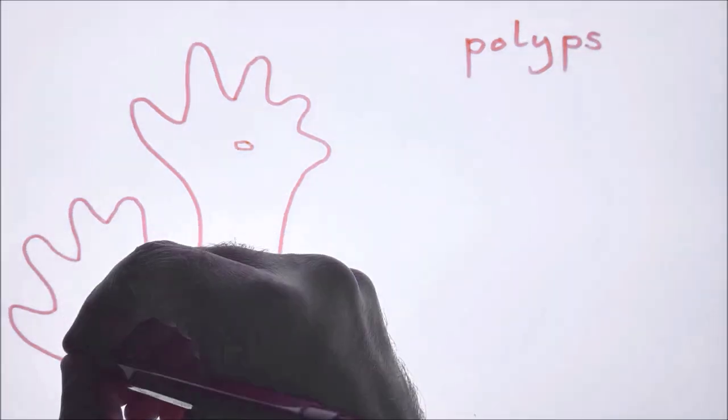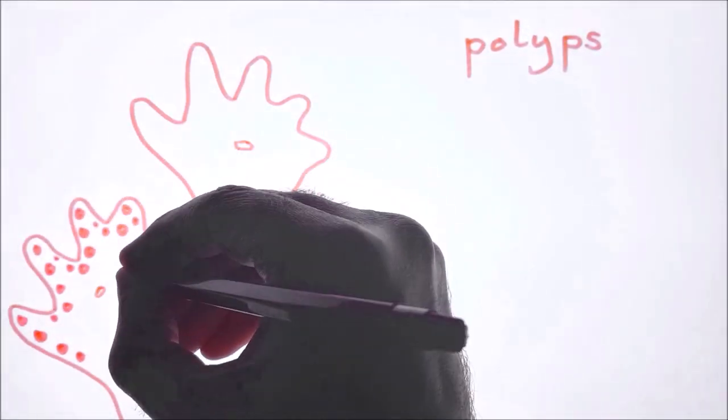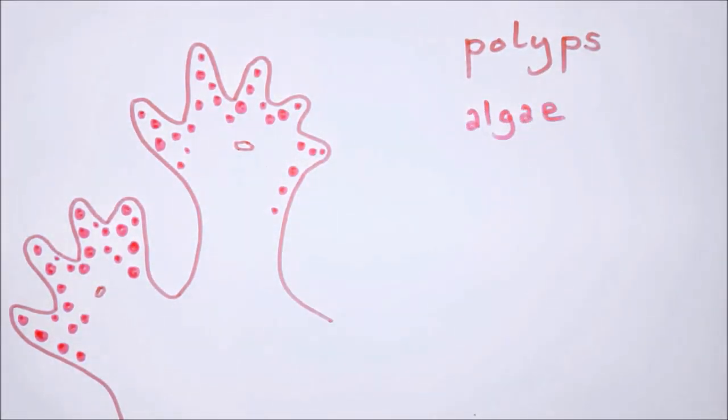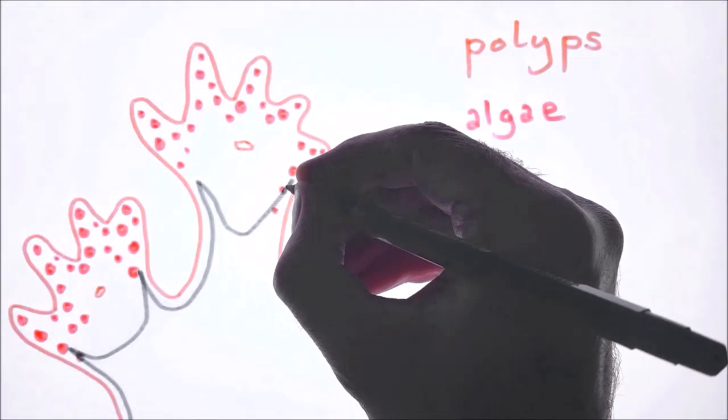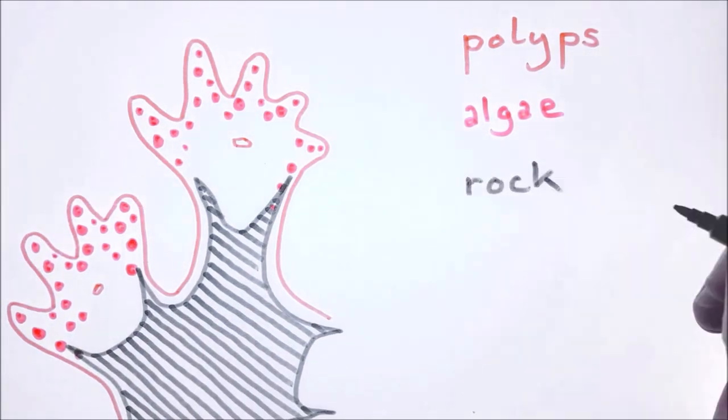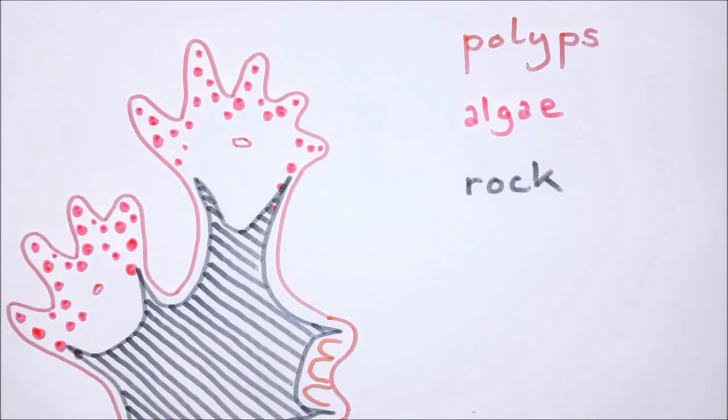Inside them, corals have algae which produce energy from sunlight. And corals also produce a form of rock. They use this to make little caves into which polyps can retreat if the conditions are not good.